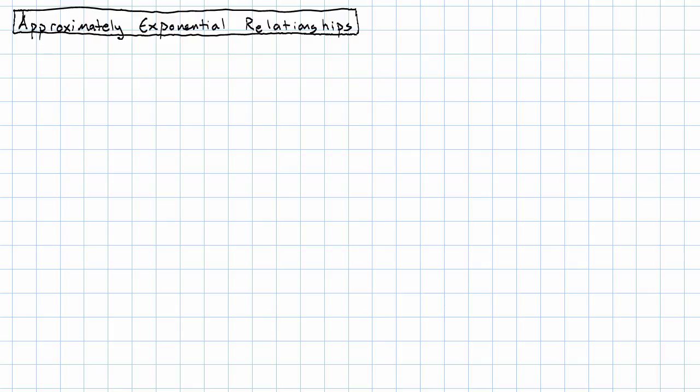Just like we saw that quantities can be approximately linearly related, we also see that quantities can be approximately exponentially related. That is, they can have a relationship that is best described as exponential, even though the actual measured values don't exactly fit onto an exponential curve. Let's see an example of this.